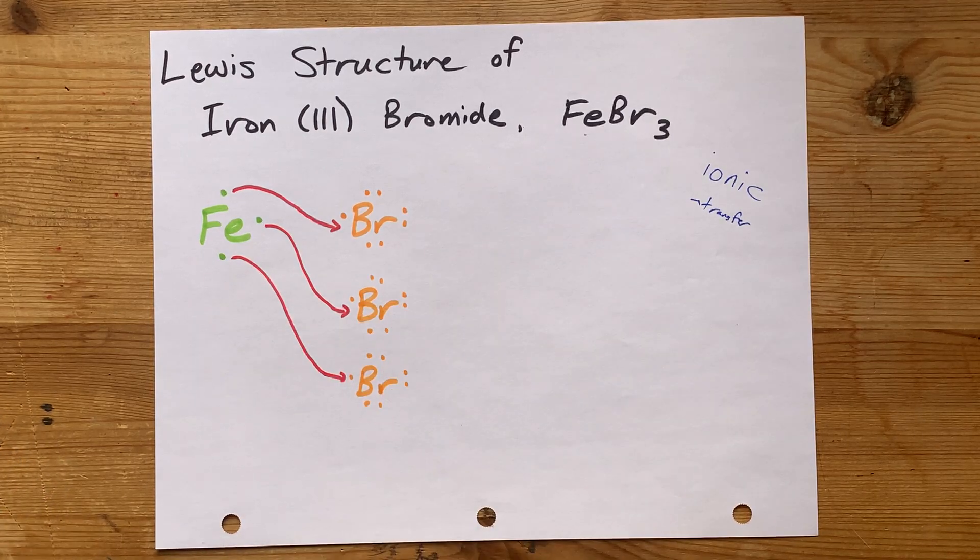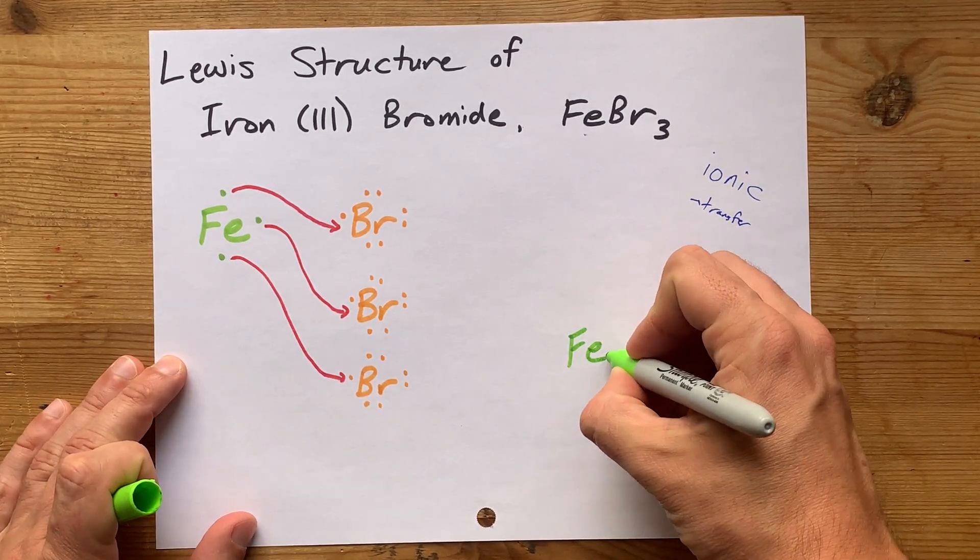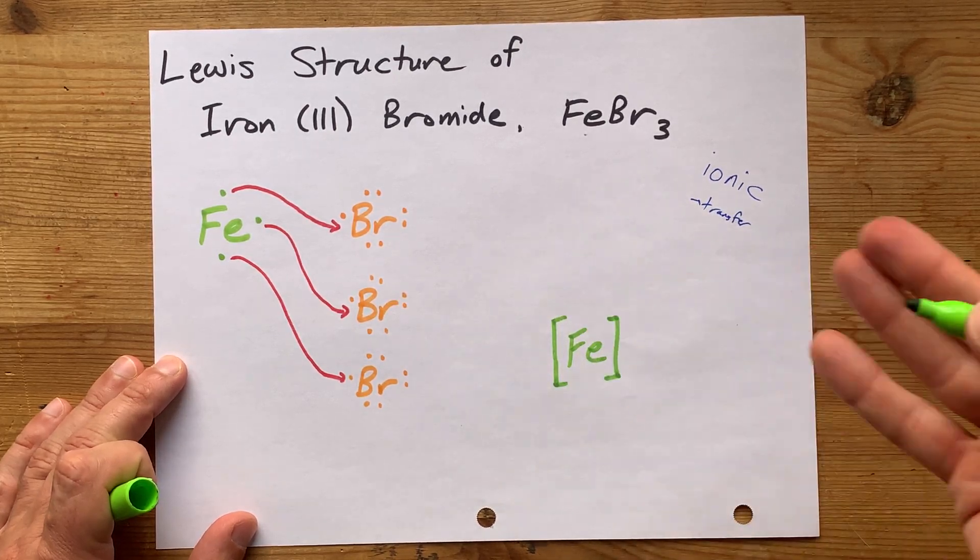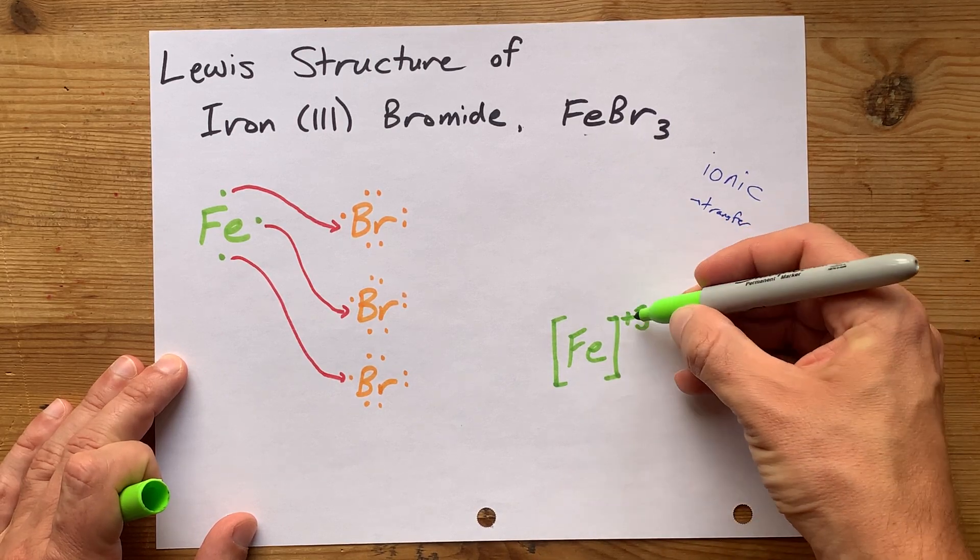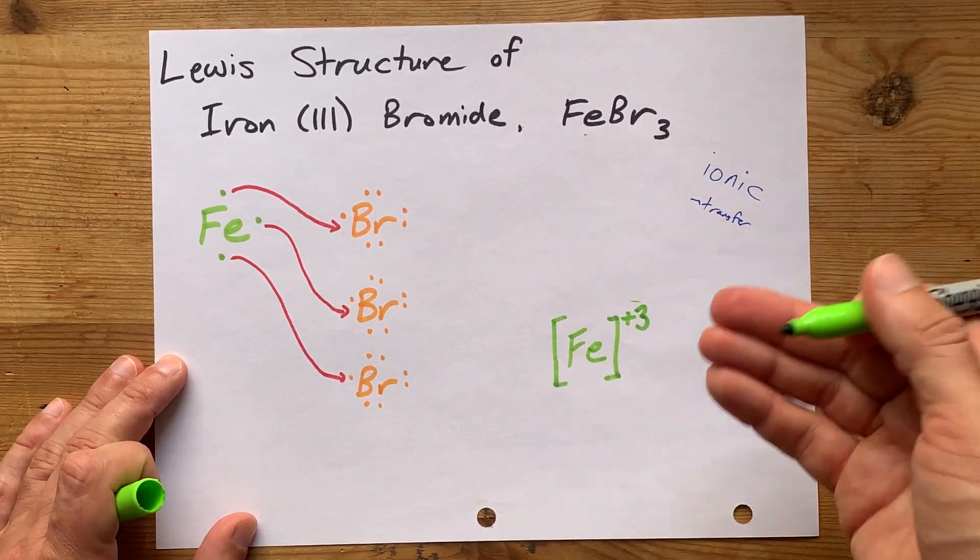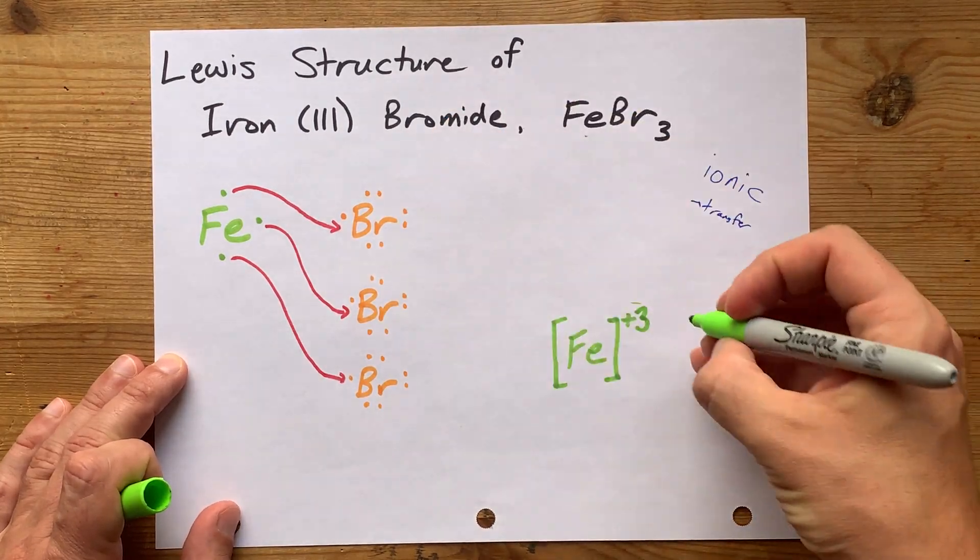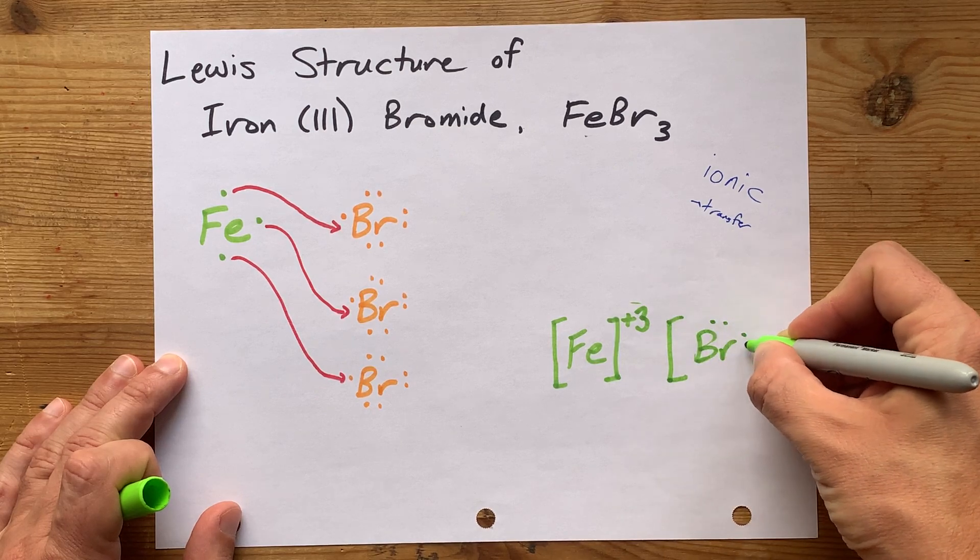But the final Lewis structure here will show the ions. We have iron. Don't draw any dots around it, because it gave away its valence electrons. But do show the plus 3 charge, indicating that it lost 3 negatively charged electrons. Then, I want you to show bromine. Now, bromine brought 7 valence electrons.